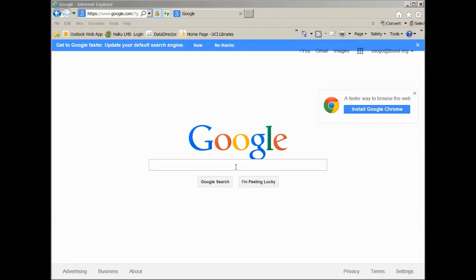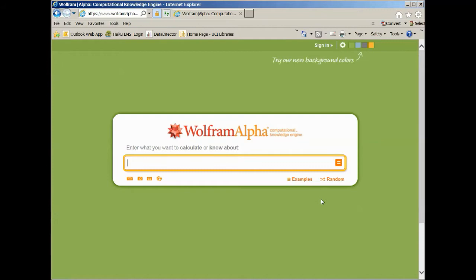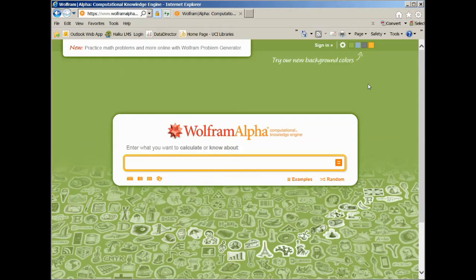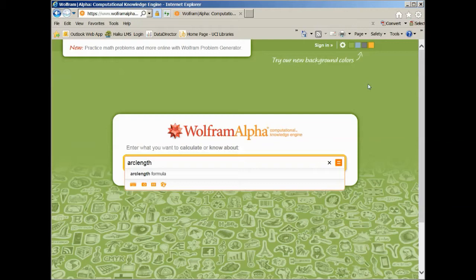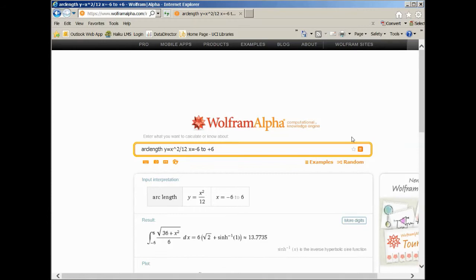So here I am at Google and I am going to search for Wolfram Alpha, which is a mathematics calculating program. It can do many things. So now I need to tell it what I want to calculate. What I want is the arc length of a function, which is y equals x squared over 12. So I have to write it x hat 2 slash 12. And the bounds I want to start with x equals minus 6, all the way up to x equals plus 6. So this is what I am telling it to calculate for me. I hit return. And here is what I got.